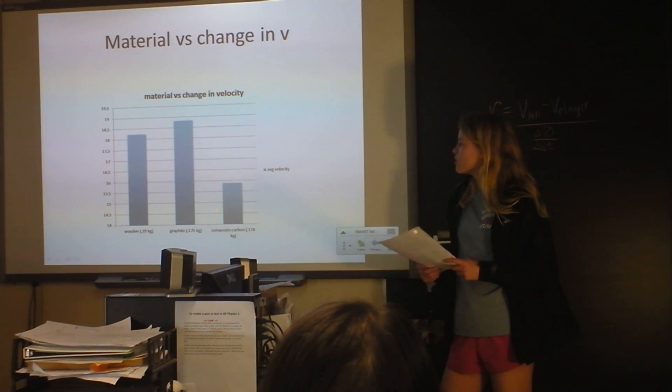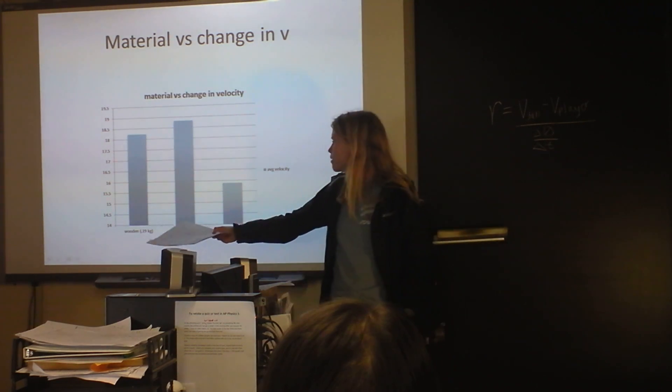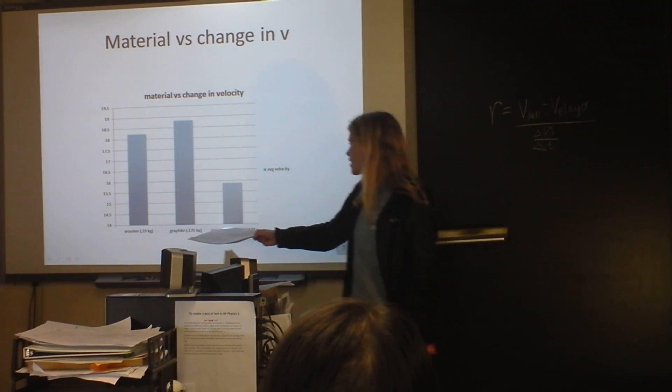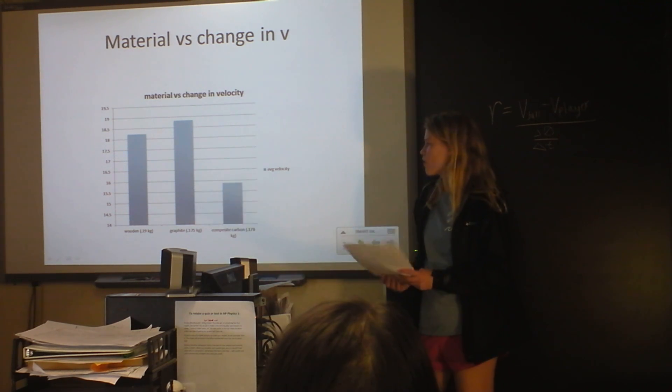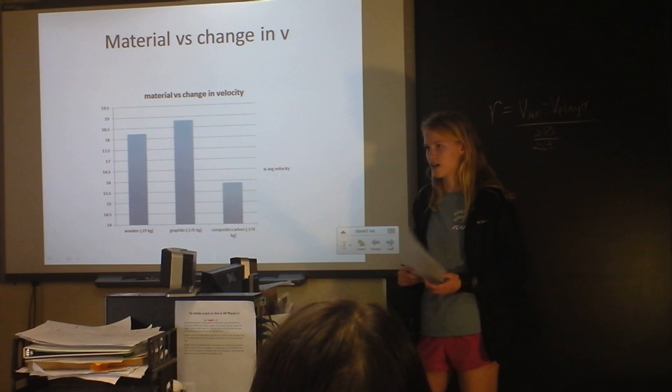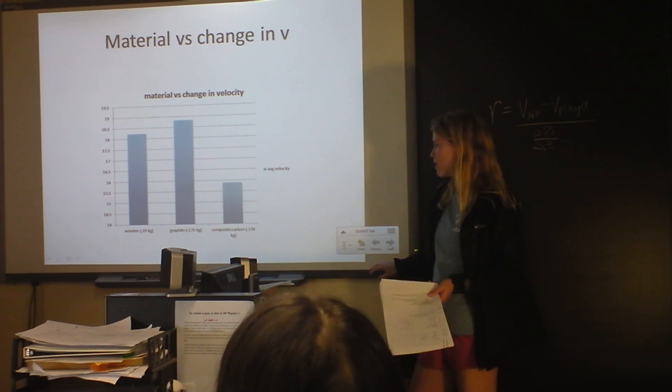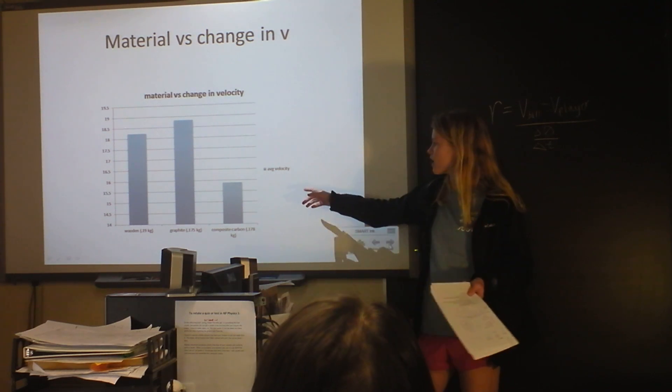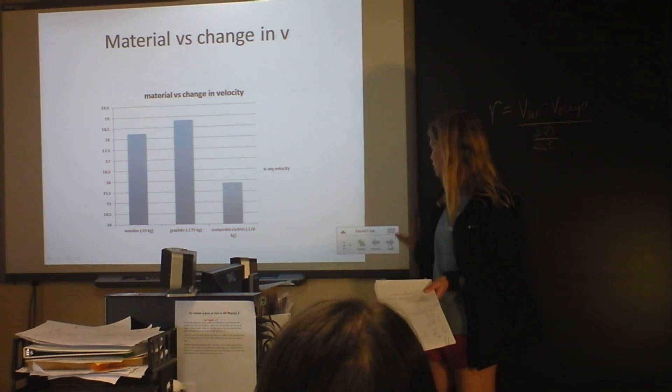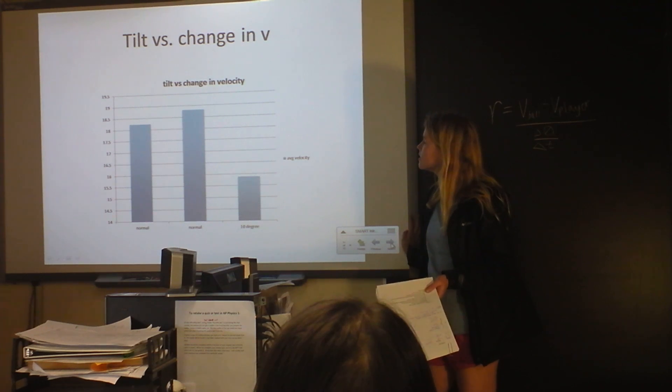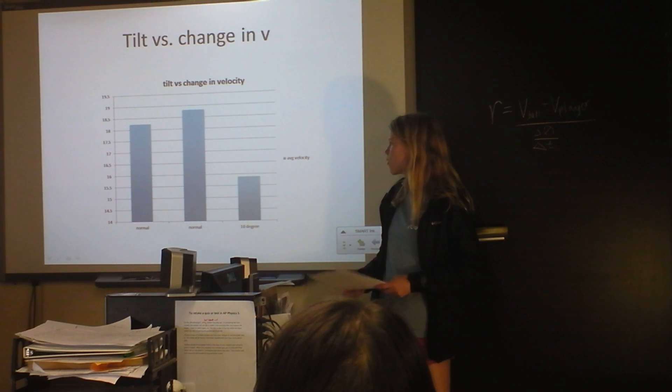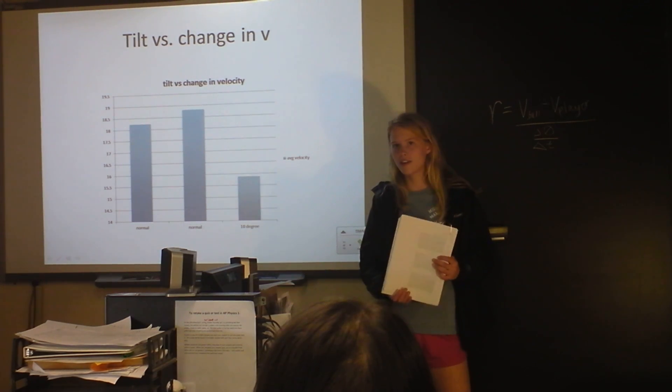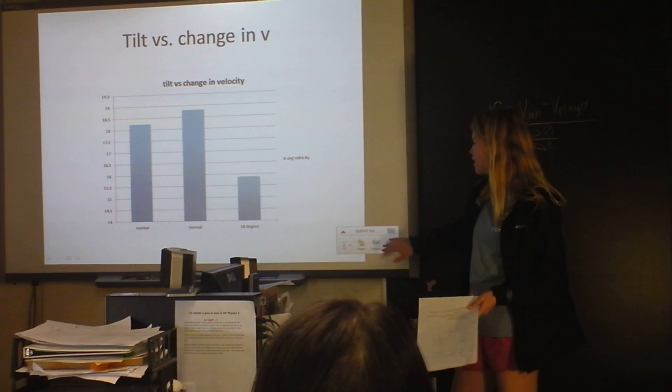The materials, Joey's stick was made of wood, Margaret's was graphite, and Cali's was composite carbon. This one's a 10 degree one. So, I'm not sure if I had enough trials to conclude that the material has a huge difference, but from my trials, wood and graphite are about the same for velocity and carbon's lower. And the 10 degree tilt stick had a significantly lower average velocity than the normal sticks, so that was interesting to find out.